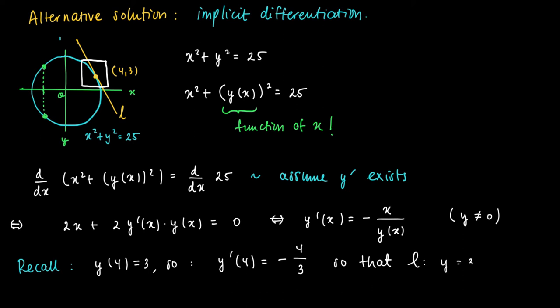So again, we find the line tangent to the curve, the solution curve of the equation, which is y equals 3 minus 4 over 3 times x minus 4.